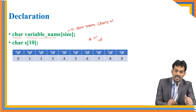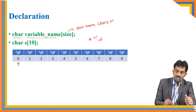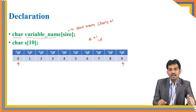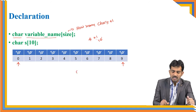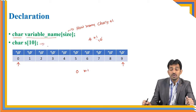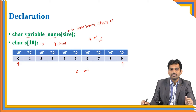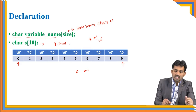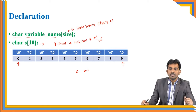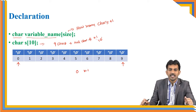For example, if you create char s[10], it creates an array with a starting address and an ending address. Indexing starts at 0 and goes up to n minus 1. The maximum characters it can store is 9 characters, and the last character is the null character. Every string ends with null character — that is the primary thing. If you know that, we can solve many problems.